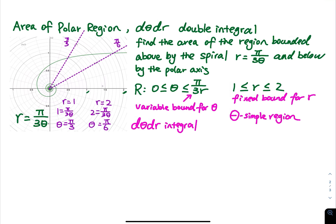I am trying to set up a d-theta dr double integral to find the area of the region bounded above by the spiral r equals pi over 3 times theta. I have the graph — I use Desmos to sketch it. Go to desmos.com and use their graphing calculator. To sketch a polar graph, go to the upper right-hand corner, click the wrench for graph settings, find the grid, and change it from rectangular to polar.